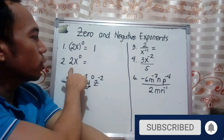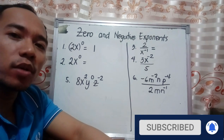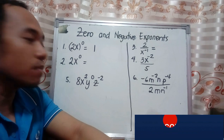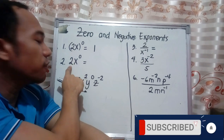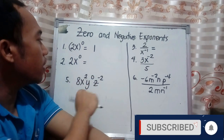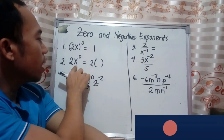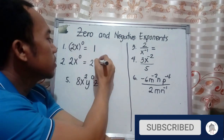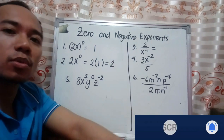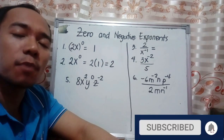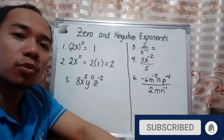In number 2, you have 2x raised to zero. The only expression that has a zero exponent is x — the 2 here doesn't have exponent zero. The exponent of 2 is 1. Therefore, this is 2 times x raised to zero, which equals 2 times 1. So 2 times 1 is equal to 2. That is the effect of a zero exponent, and how we simplify items 1 and 2.